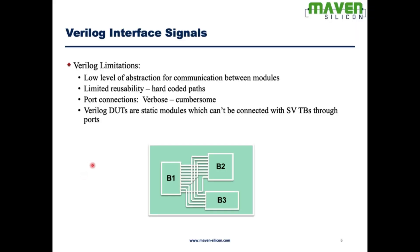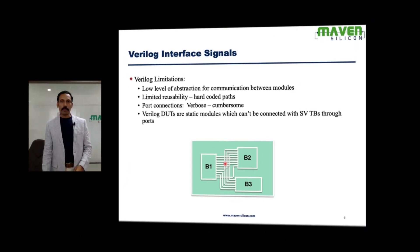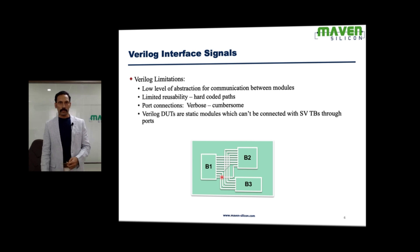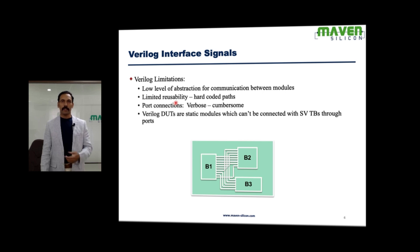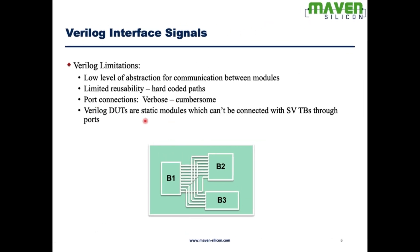In Verilog, all connections are made port by port. If there are three IPs and each IP is very complex with hundreds of ports, you need to make multiple connections manually. The abstraction is very low level — everything happens at the signal level with very limited reusability, and it would be very difficult to debug. Also, Verilog DUTs are static components which cannot be directly instantiated within a SystemVerilog class-based verification environment, because the verification environment is a dynamic object.